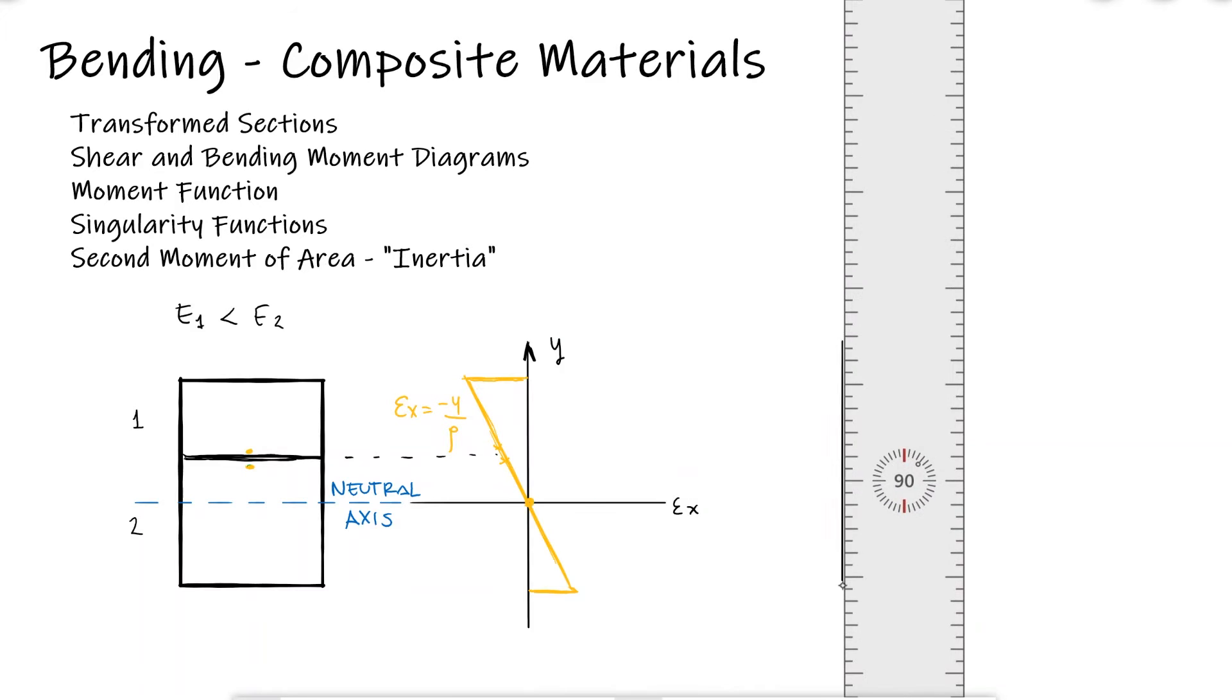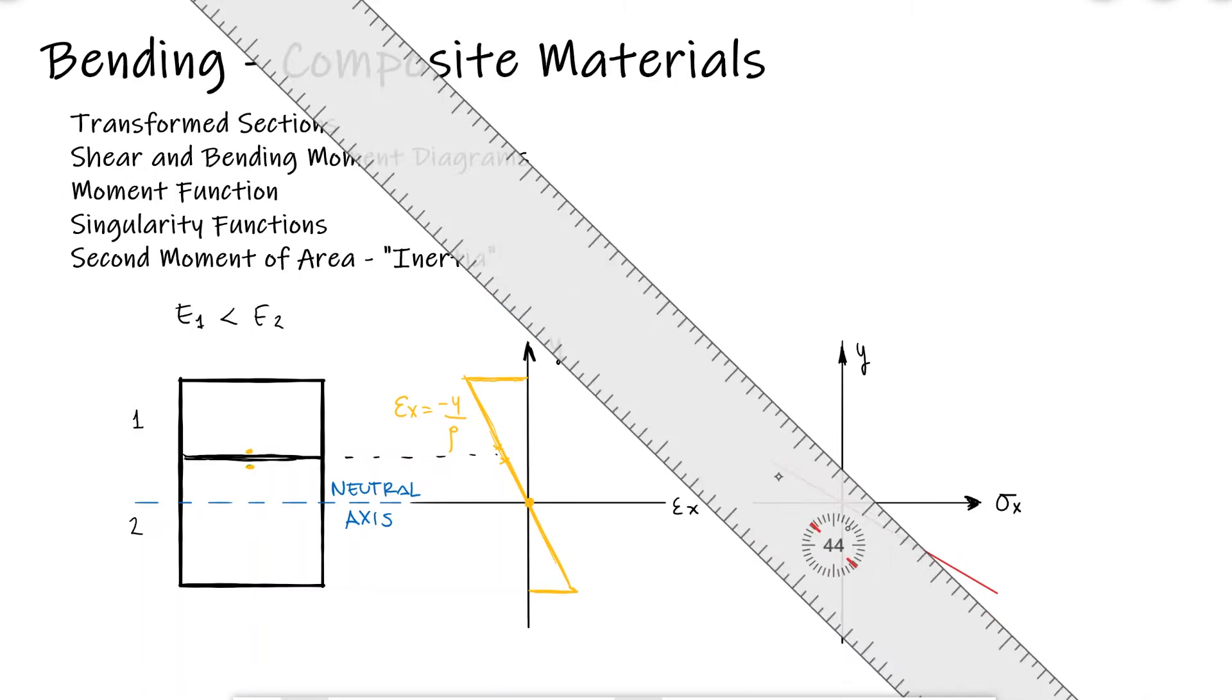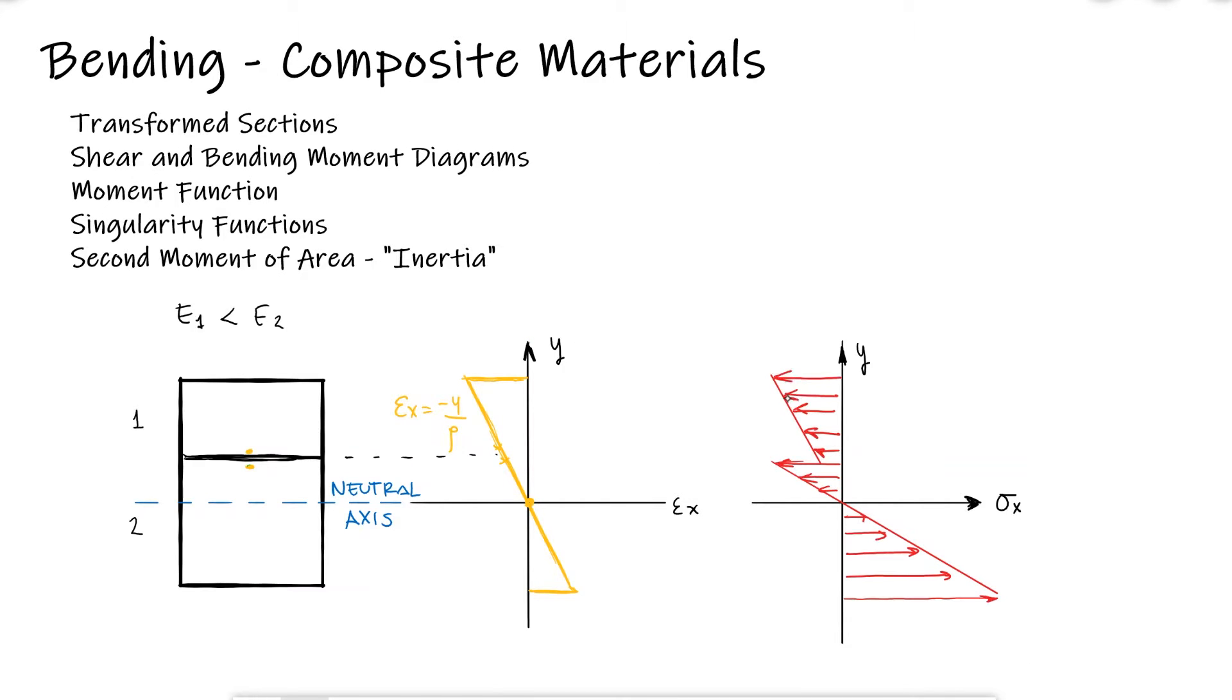By multiplying the strain by the elastic modulus of each material, we see that there is indeed a discontinuity of the stress at the boundary, which is totally fine. Because the elastic modulus of material 2 is higher than that of material 1, material 2 can take a higher stress coming from the bending moment and still result in a comparable strain to material 1,